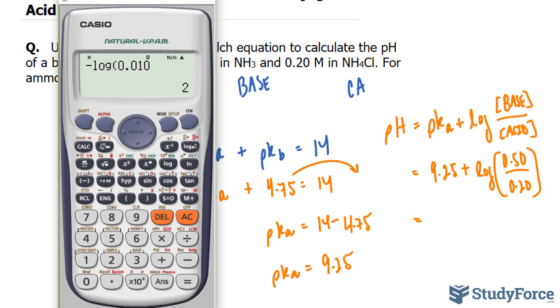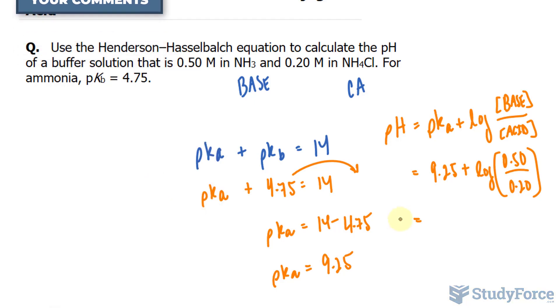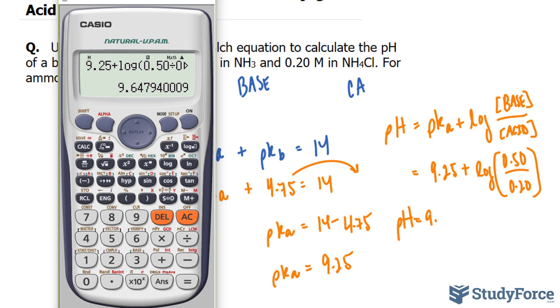Let's use our calculator, 9.25 plus log of 0.50 divided by 0.2 and we get a pH that is basic as 9.65.